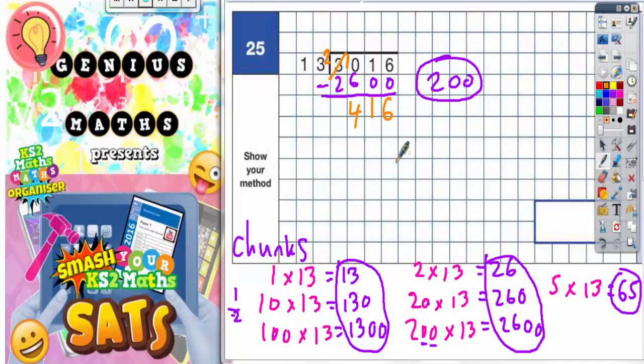So now I need to go back and say what's the biggest number now from my choice of chunks that I can take away from 416. Well it's going to be this one here, 260. So if I take away 260, that is a chunk of 20×13.